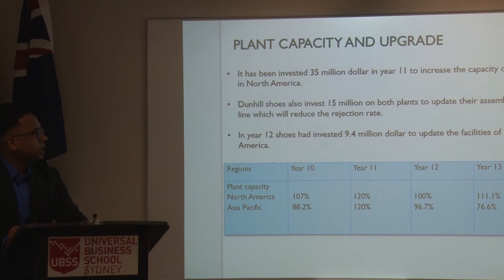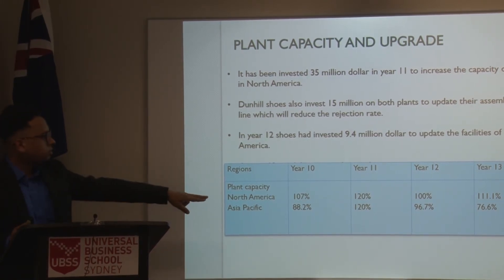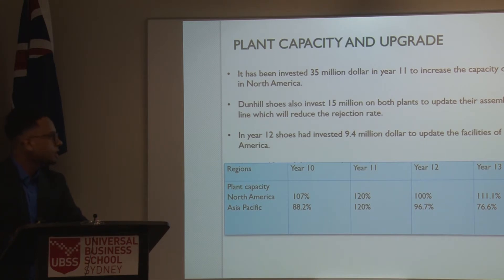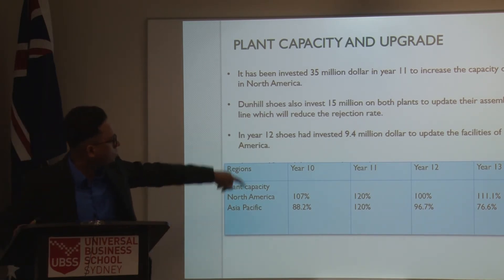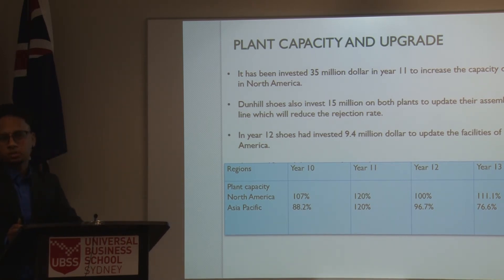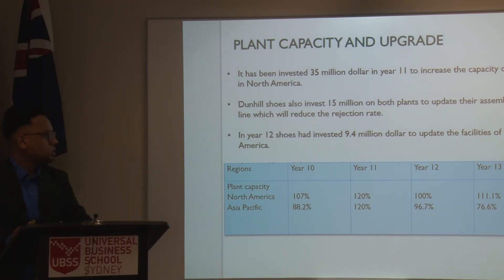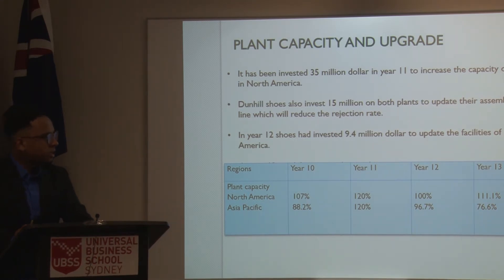Coming to plant capacity and upgrades, we invested $35 million dollars, which was a significant amount that helped maximize the use of plant capacity. We can see in year 11 we used 120% capacity — the reason was because we invested the money and wanted to use the plant on overtime. Furthermore, we invested $50 million on both plants to reduce the rejection rate. In year 12, we also invested $9.4 million in North America. In year 11 we used 120% capacity to win bids in all four regions and meet demand. In year 12, we didn't want to pay overtime on our workers, so we didn't use overtime capacity.